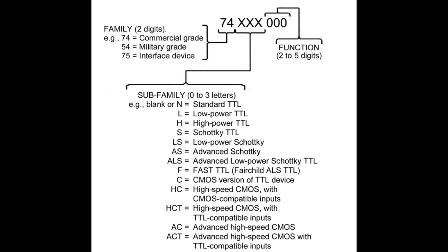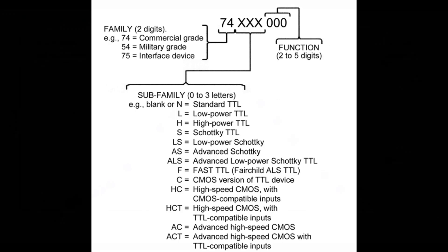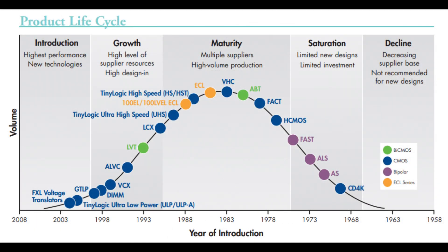There's been some confusion about the first two numbers: 74 versus 54. The 54 prefix is military grade, indicating the temperature range over which the parts can be used. 74 is the commercial grade. 75 is sometimes used as an interface device. You may see other numbers in front with different meanings, but 74 and 54 are the standard ones.